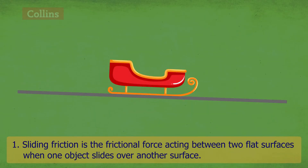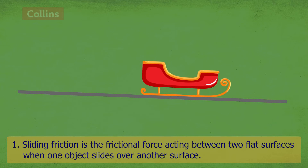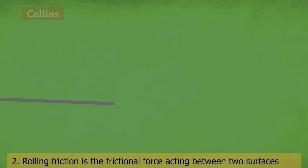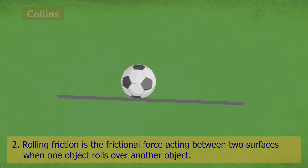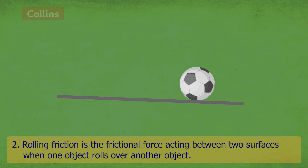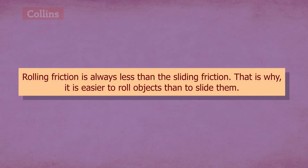Rolling friction is the frictional force acting between two surfaces when one object rolls over another object. Rolling friction is always less than the sliding friction. That is why it is easier to roll objects than to slide them.